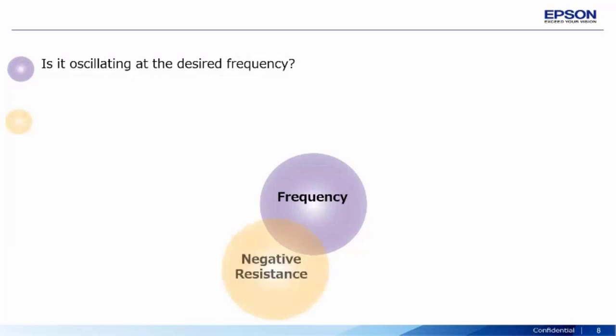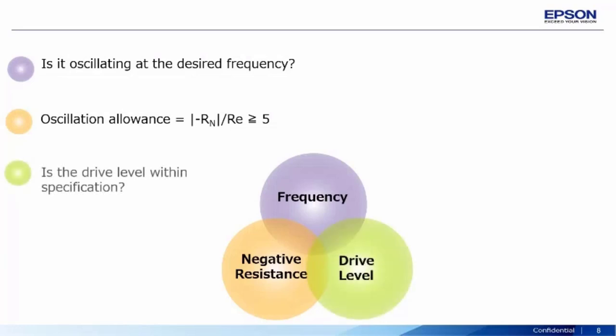While designing your oscillator circuit, ensure that the crystal is oscillating at the desired frequency, the oscillation allowance is greater than or equal to five times the maximum resistance value of the circuit, and the drive level is within specification.